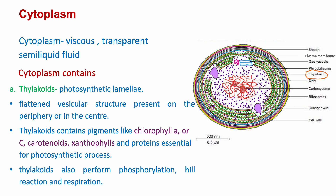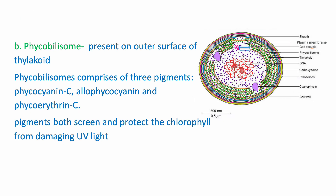Thylakoids contain pigments such as chlorophyll a or c, carotenoids, xanthophylls, and proteins essential for the photosynthetic process.